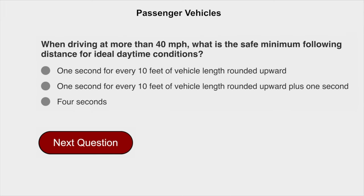When driving more than 40 miles per hour, the safe minimum following distance for ideal daytime conditions is 1 second for every 10 feet of vehicle length, rounded upward plus 1 second.